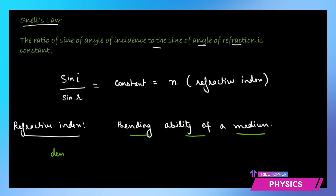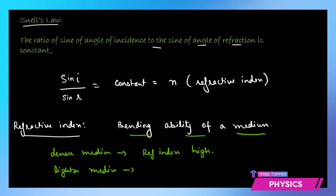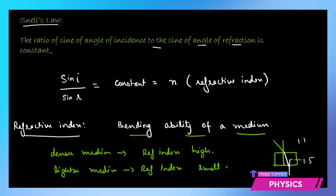If we have a denser medium, its refractive index is going to be high. If it is a lighter medium, the refractive index is going to be smaller. So if you know the refractive indices of two media — say 1.1 and 1.5 — you can determine that the ray will slow down and bend in the denser medium, and when it travels back into the medium with index 1.1 it will speed up and bend away from the normal.